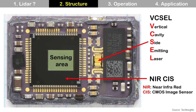If you zoom in to the lower part of the LiDAR module, you can see a more detailed structure. The pixel is a vertical cavity surface-emitting laser, a kind of laser that emits infrared light. The sensor at the left is a CMOS image sensor like a normal camera for photo shooting, but for LiDAR the sensor detects infrared instead of visible light.